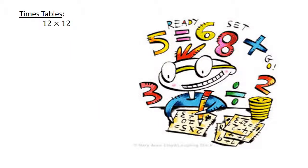12 times 12 equals 144. 7 times 7 equals 49.